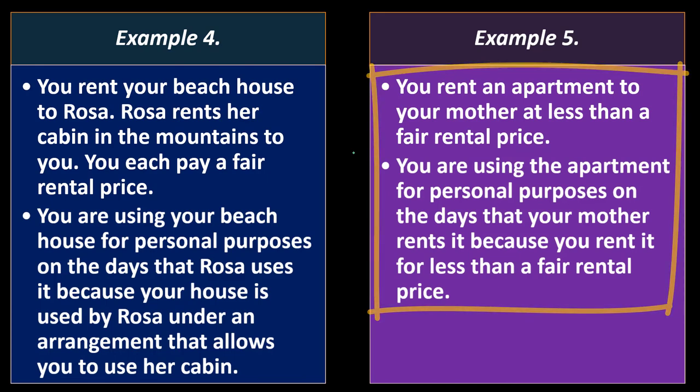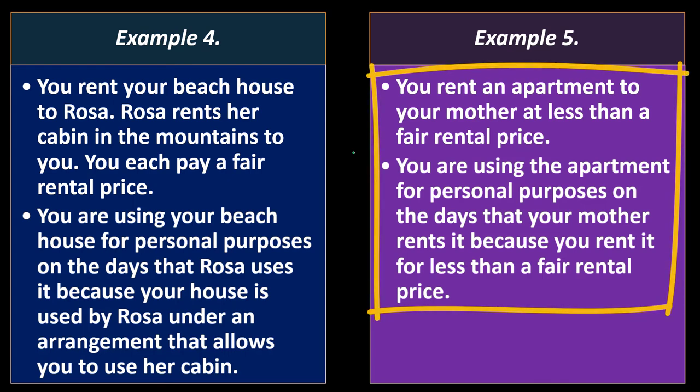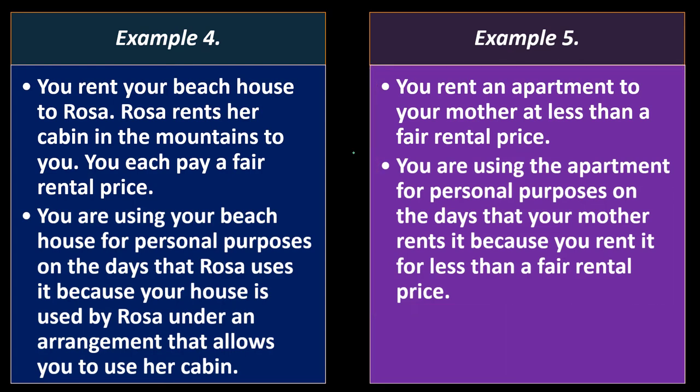Example 4: you rent your beach house to Rosa, and Rosa rents her cabin in the mountains to you. You each pay a fair rental price. You are using your beach house for personal purposes on the days that Rosa uses it, because your house is used by Rosa under an arrangement that allows you to use her cabin. Example 5: you rent an apartment to your mother at less than fair rental price. You are using the apartment for personal purposes on the days that your mother rents it, because you rent it for less than fair rental price.